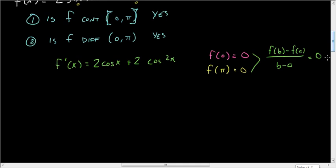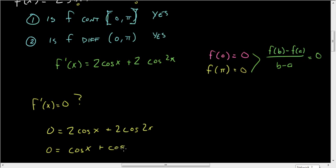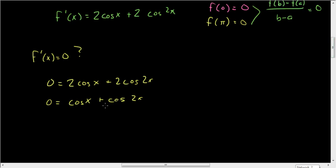So we want to know when is f'(x) = 0? We set 2 cos x + 2 cos 2x = 0. We can divide by 2 on both sides to get 0 = cos x + cos 2x. We can rearrange this to -cos x = cos 2x.